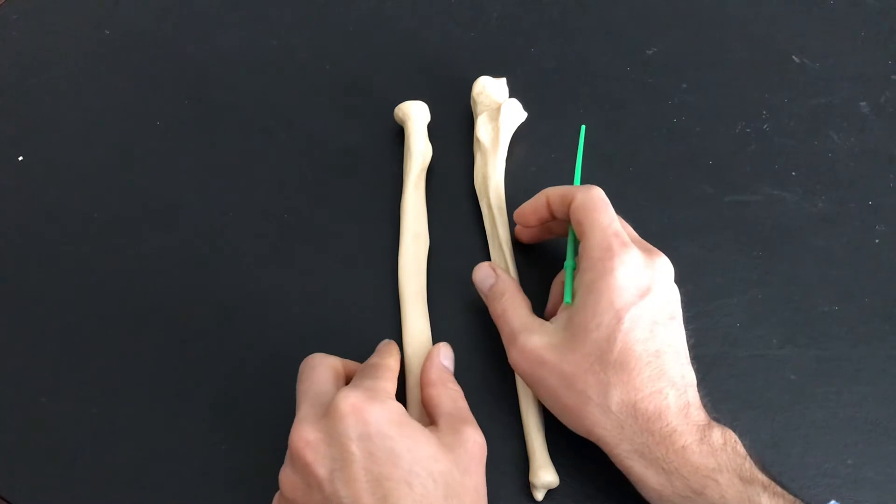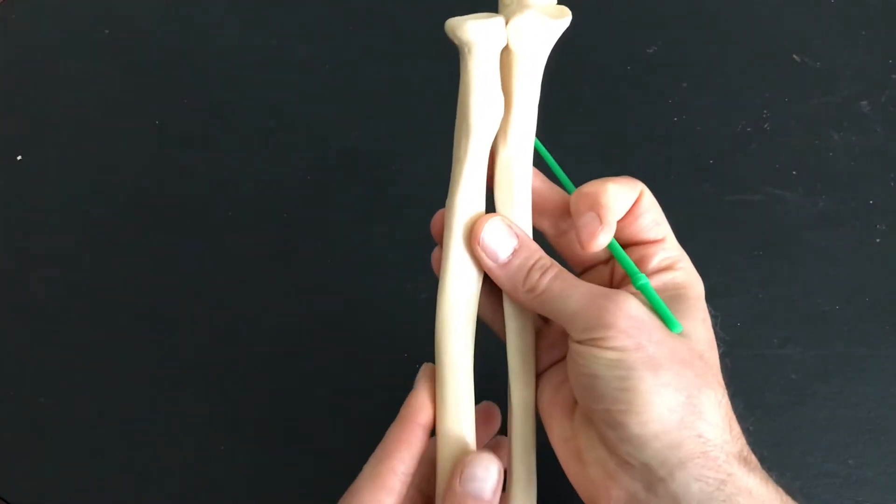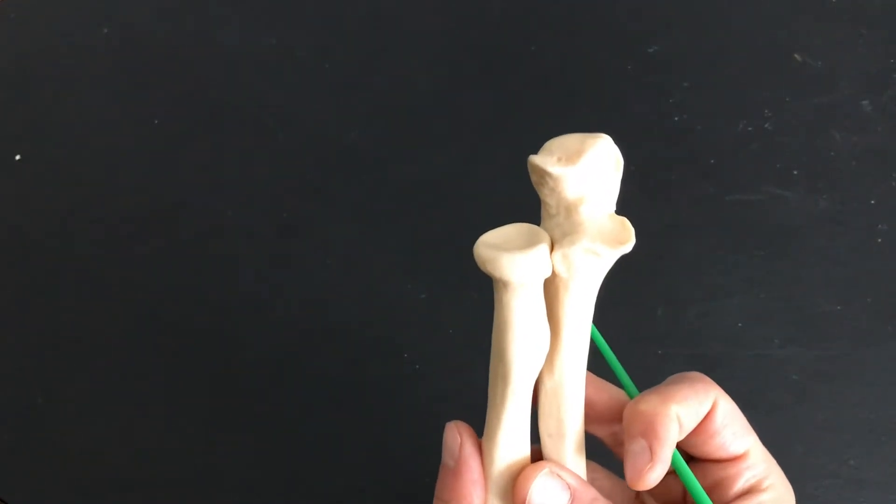These two bones of the antebrachium—bones of your forearm—sit together quite nicely just like this. Let me show you a couple parts about how they work together.